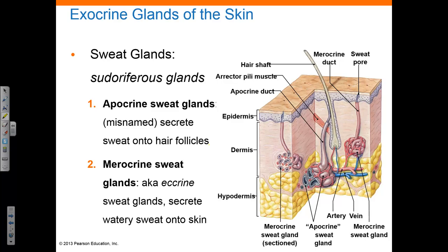Sweat glands are also exocrine glands found in the integumentary system. Apocrine sweat glands secrete sweat onto hair follicles through merocrine secretion — so the name apocrine sweat gland is a misnomer. These glands are found in the armpits, nipples, and pubic regions and become more active at puberty. Merocrine sweat glands, also referred to as eccrine sweat glands, secrete watery sweat directly onto the skin, with the palms and soles having the highest numbers. These glands are involved in perspiration — the evaporation of sweat that helps cool the body.